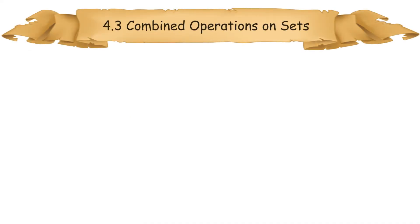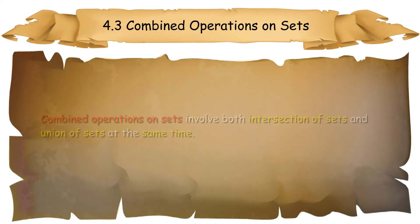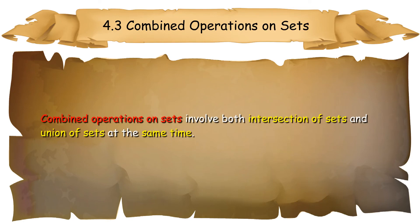4.3 Combined Operations on Sets. Combined operations on sets involve both intersection of sets and union of sets at the same time. It is solved from left to right. If there are operations in brackets, the operations in brackets must be carried out first.